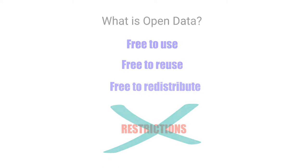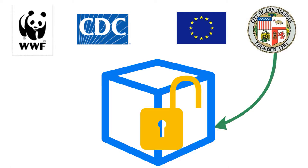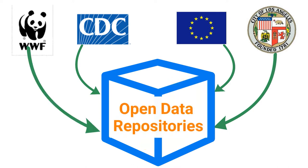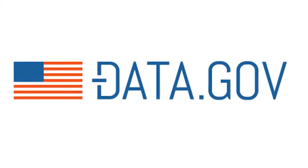Increasingly, government agencies and non-governmental organizations are beginning to release raw data sets for public use through what are often referred to as open data repositories. A repository is a place where information and content is stored. The open data repositories referred to in this tutorial are digital repositories, meaning that the data available through the repository are stored as digital files.